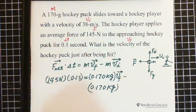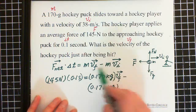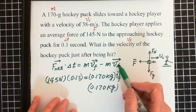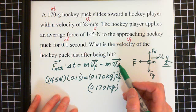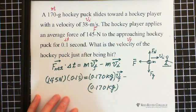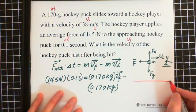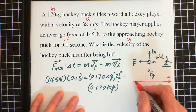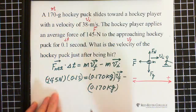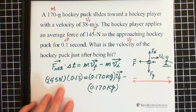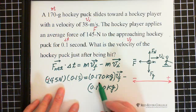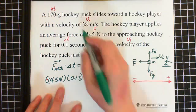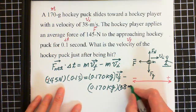Now let's consider the direction, because this is a vector equation. The hockey puck is moving towards the hockey player, and the hockey player applies a force opposite to the direction of the initial velocity. If we set the initial velocity direction as positive, then the initial velocity is positive and the applied force is negative. So we put negative 145 Newtons times 0.1 equals 0.170 times V-final minus 0.170 times 38 meters per second.